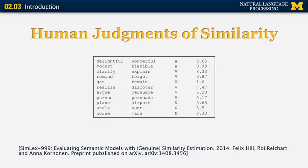One other example is from a more recent paper, published in 2014 by Felix Hill et al. It has a much larger data set with 999 words, covering all kinds of parts of speech including adjectives, verbs, nouns, and adverbs. For example, they found that 'delightful' and 'wonderful' are very similar, with a similarity of 8.65 out of 10, whereas 'modest' and 'flexible' were not similar at all, with a similarity of only 0.93. Some argue that 'argue' and 'persuade' were moderately related at 6.23, versus 'pursue' and 'persuade', which had a much lower similarity of 3.17.